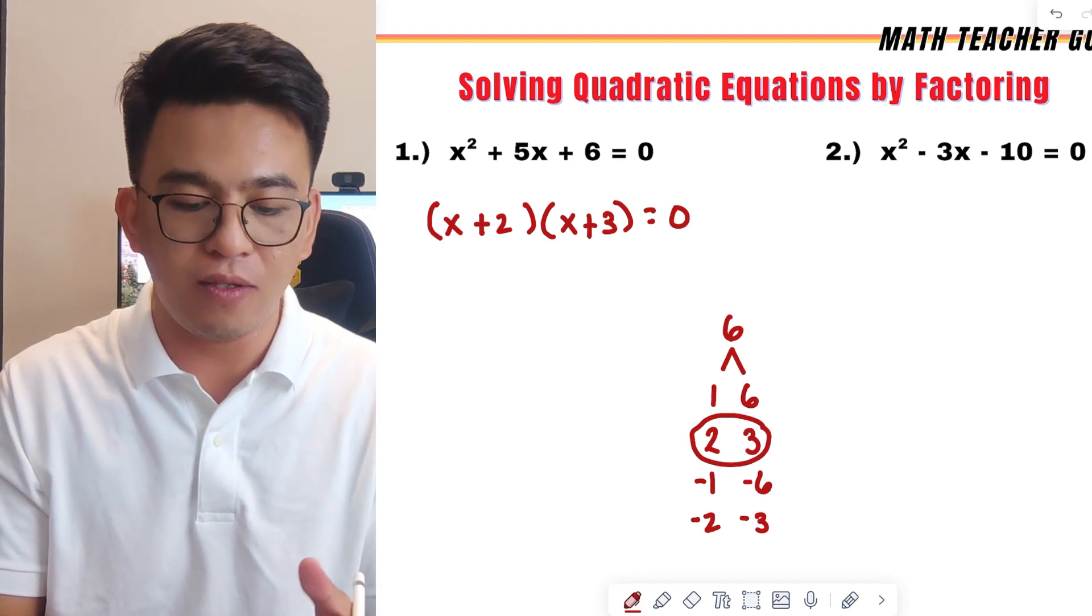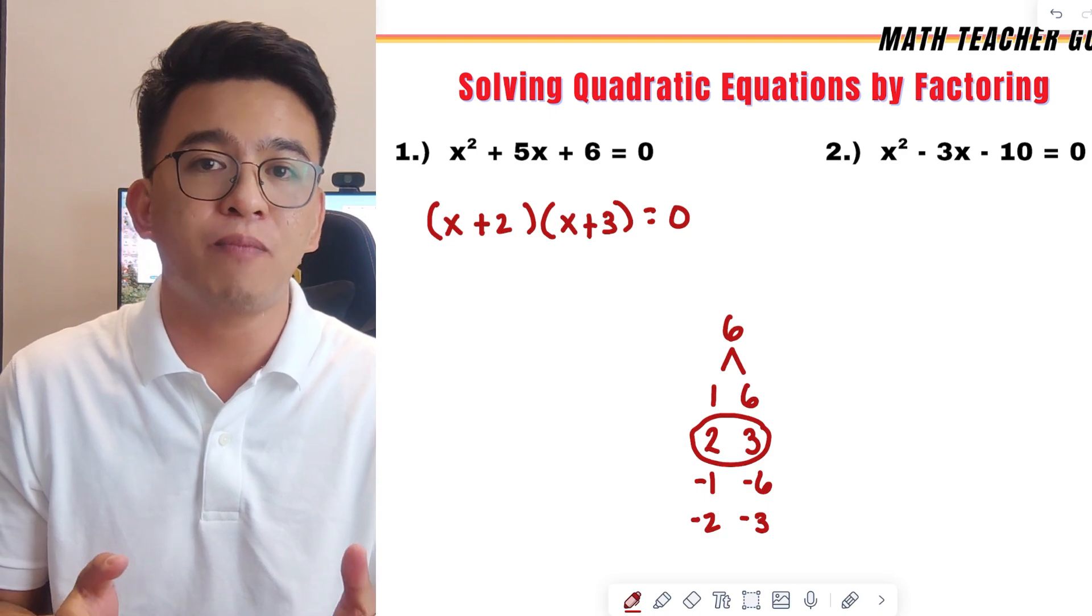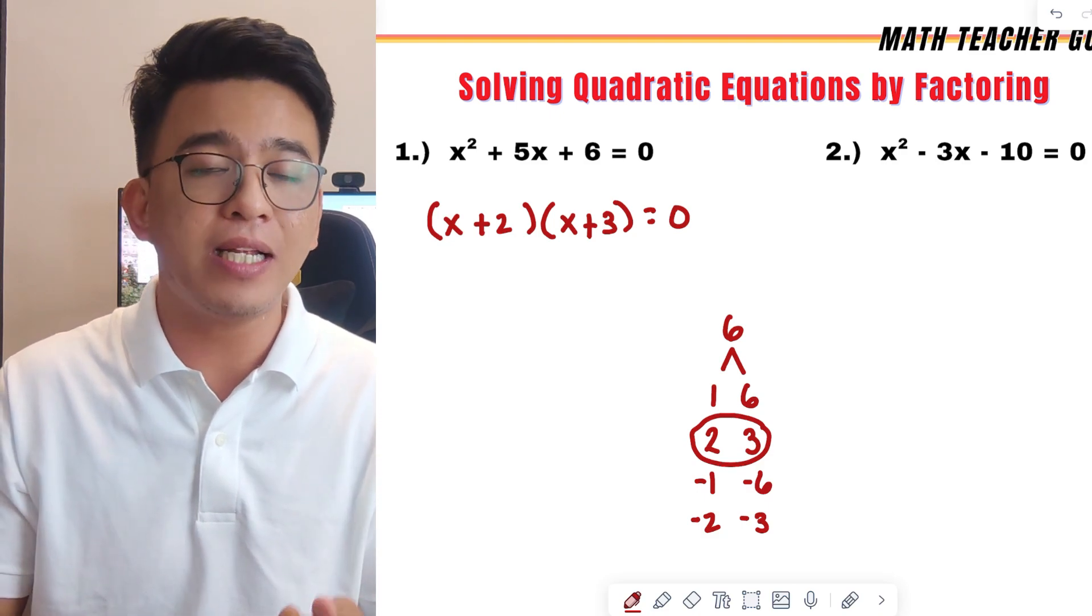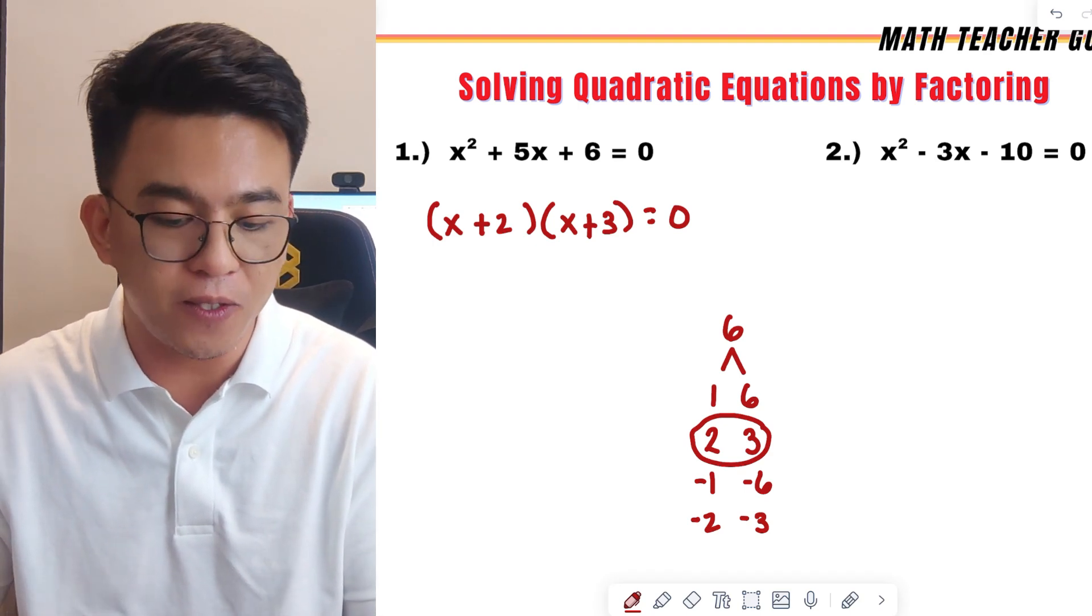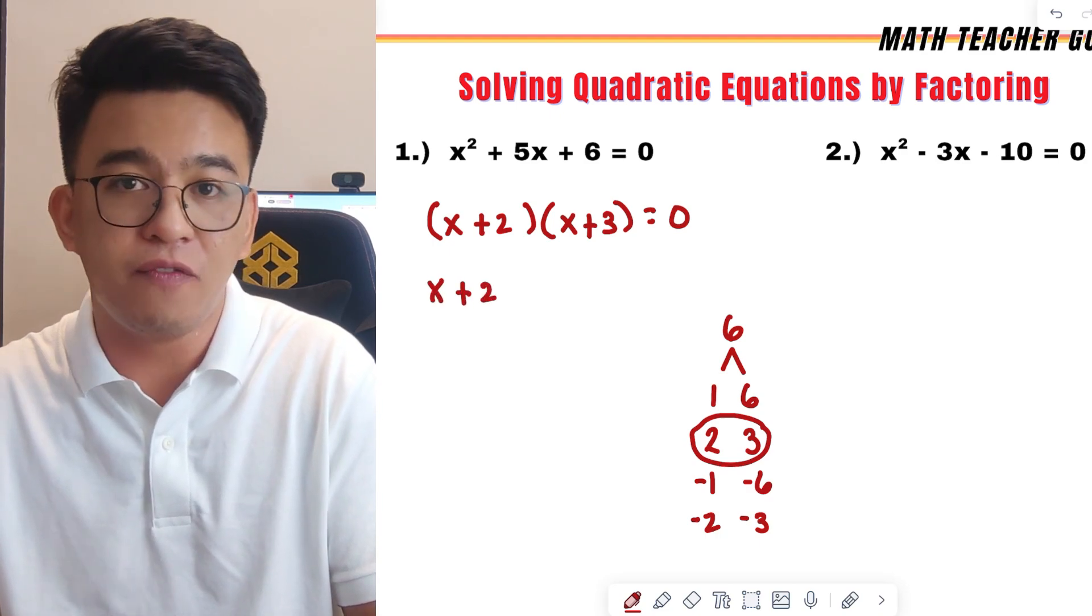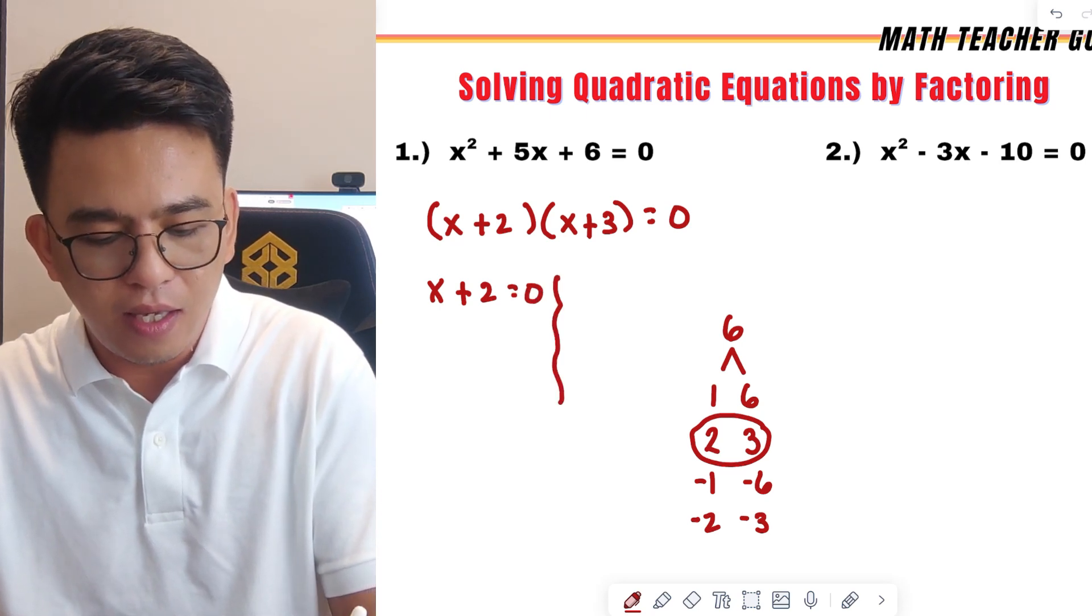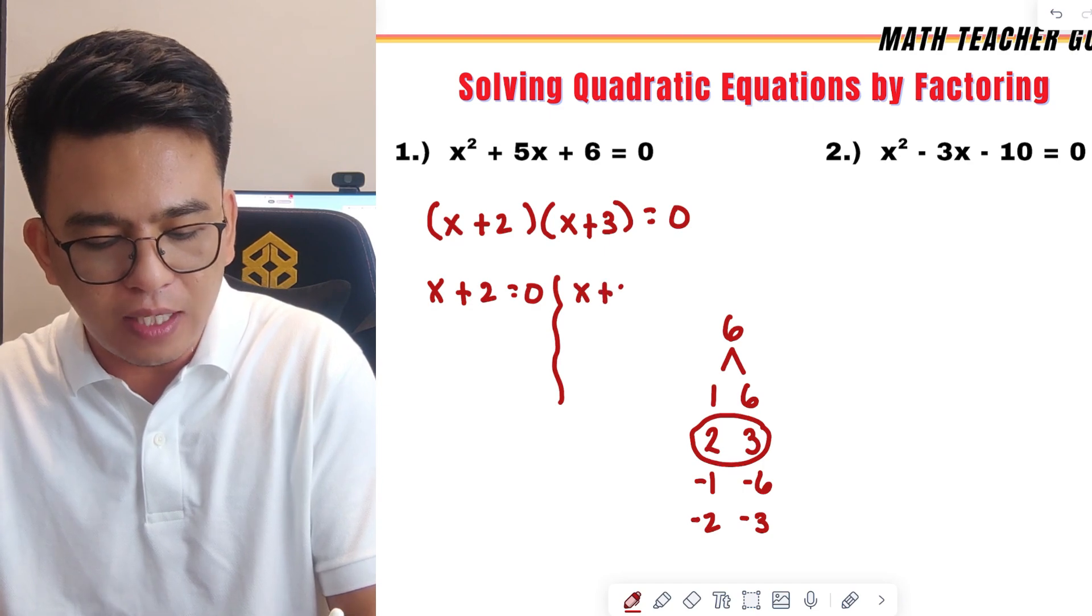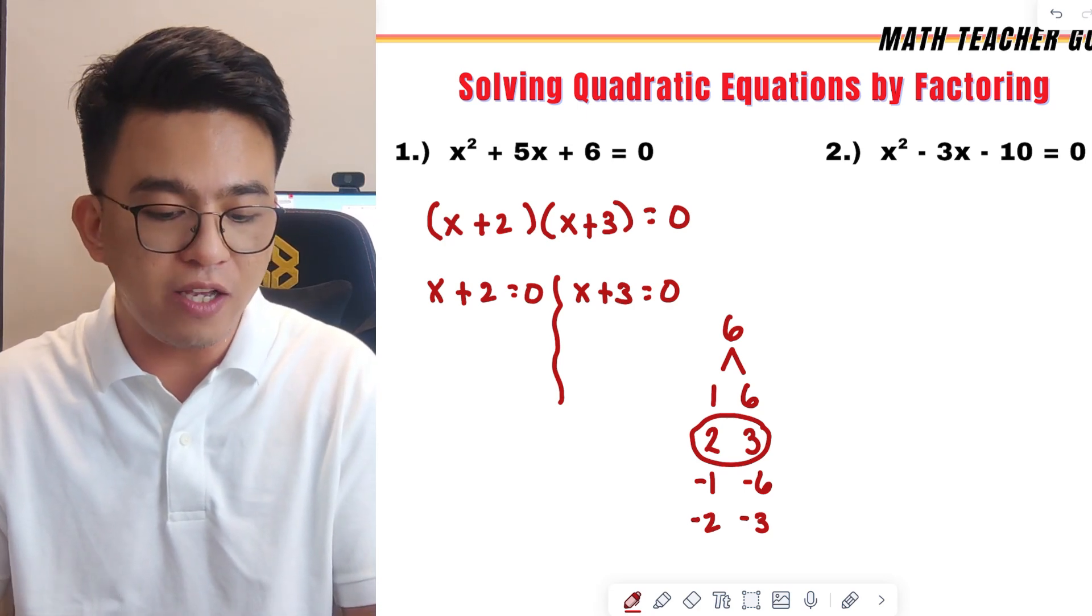And after factoring out the trinomial, what we need to do is to use the zero product property. What we do here is that we will equate each factor by zero. We have x plus 2 for the first factor, then equal to zero. Then, second factor x plus 3 is also equal to zero. And then we will solve for the value of x.